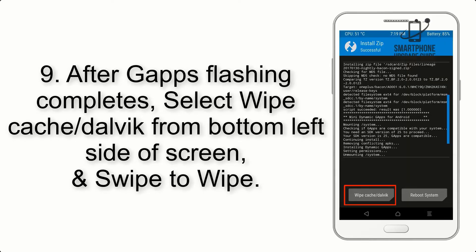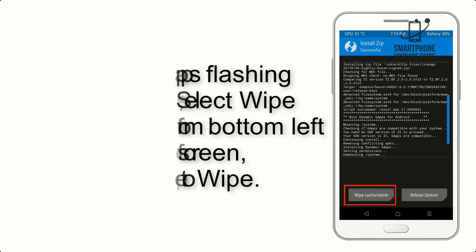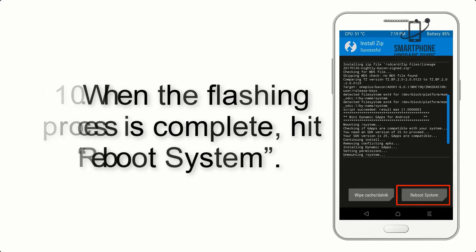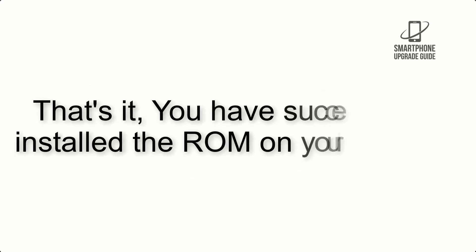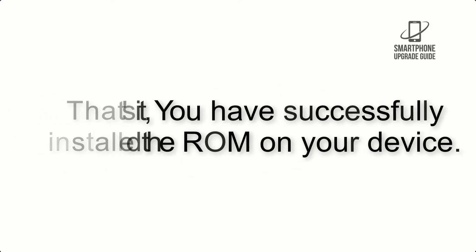Step 8: Flash the GApps zip package in the same manner. Step 9: After GApps flashing completes, select Wipe Cache and Dalvik from the bottom left side of the screen and swipe to wipe. Step 10: When the flashing process is complete, hit Reboot System. That's it — you have successfully installed the ROM on your device.